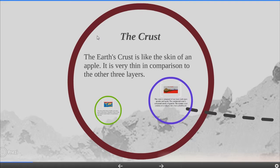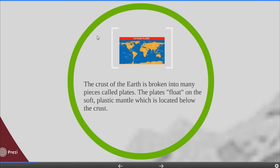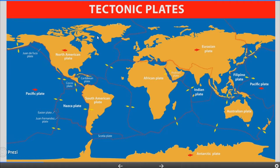The crust. The earth's crust is like the skin of an apple — very thin in comparison to the other three layers. The crust is the layer that you live on and is the most widely studied and understood. The crust of the earth is broken into many pieces called plates. The plates float on the soft plastic mantle which is located below the crust. The tectonic plates are shown in the following picture.